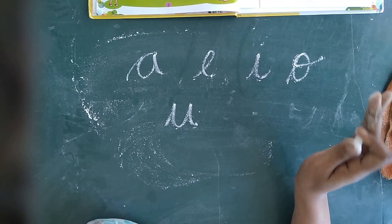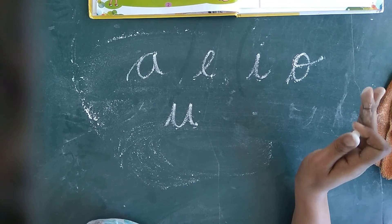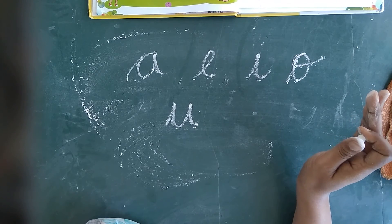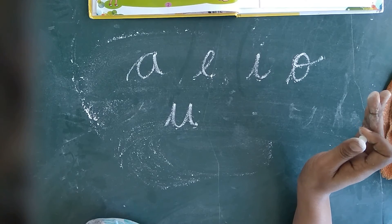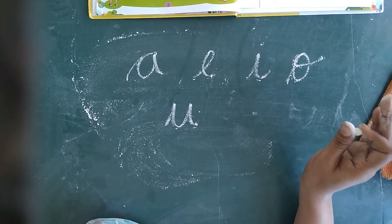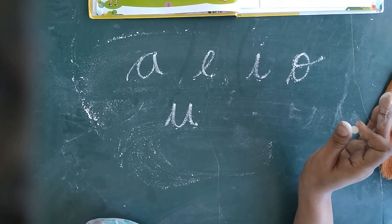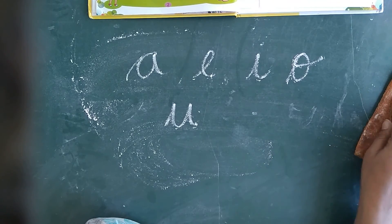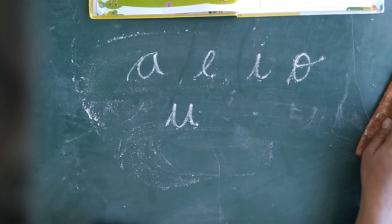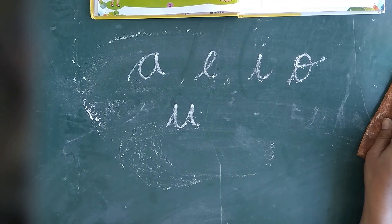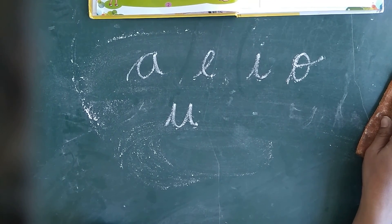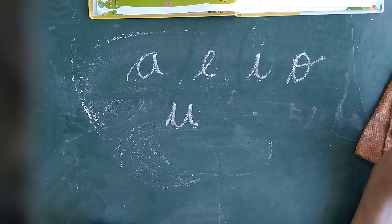There are twenty-one consonants in English alphabet. Okay, understood? There are twenty-one consonants in English alphabet. Okay bachyo, yee raha aach ka topic alphabet — this was today's topic, Alphabet.